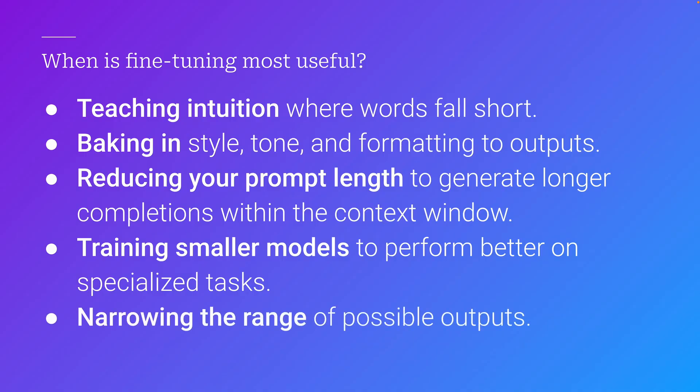Another cool way to use fine-tuning is to train a smaller model to perform at the level of a higher model, because making models bigger and bigger is just not sustainable — they get slower and more expensive the more parameters you add. So even though they become more capable, there are tradeoffs. We need to think about selecting the right model size for the task, not just always using the biggest model. Fine-tuning also narrows the range of possible outputs, which is really helpful in preventing unwanted behavior.